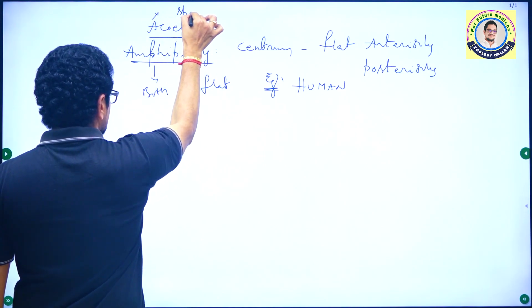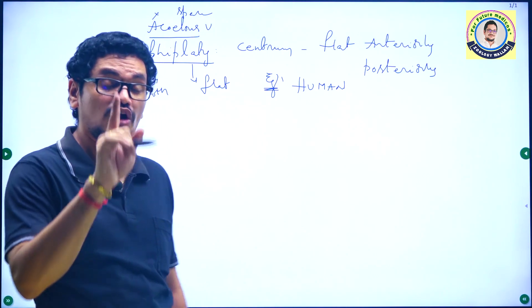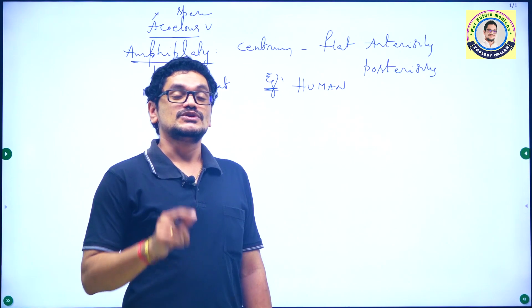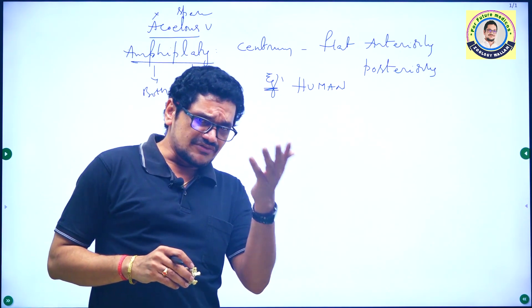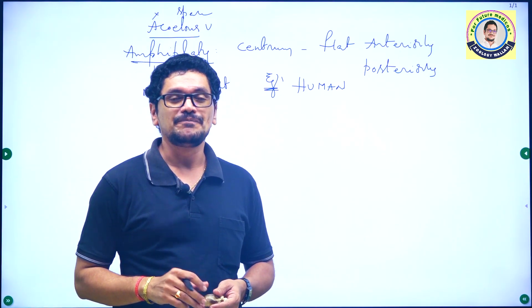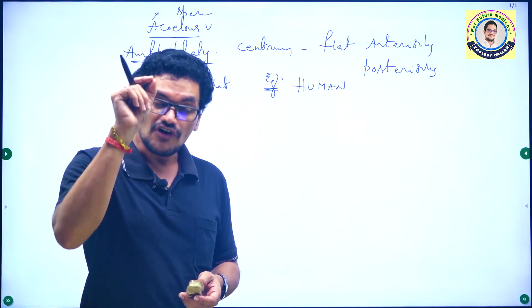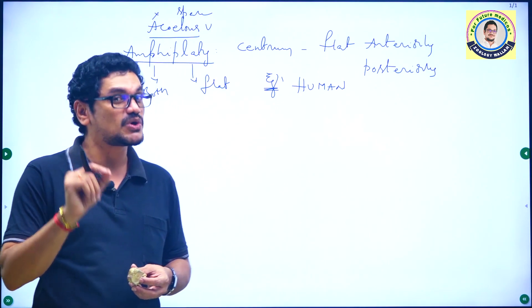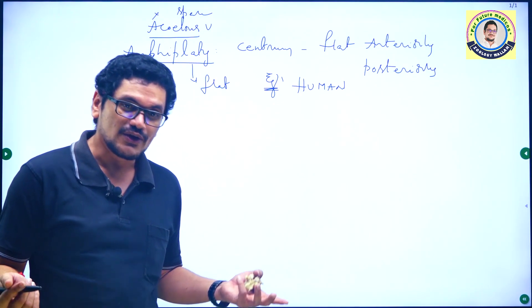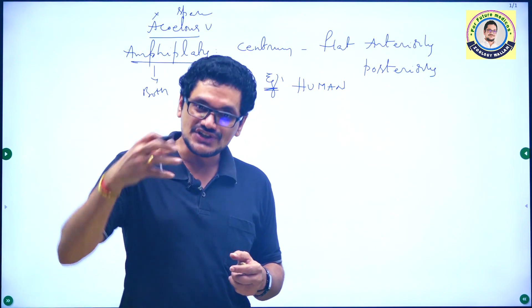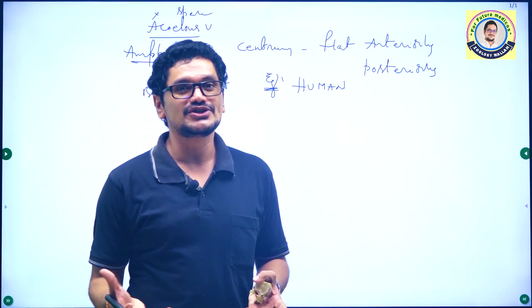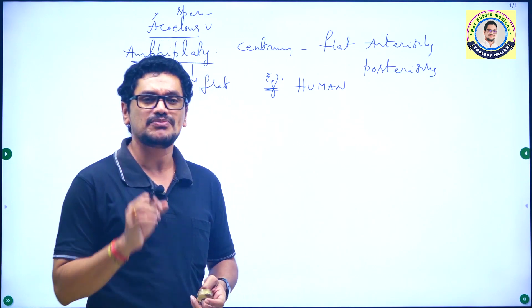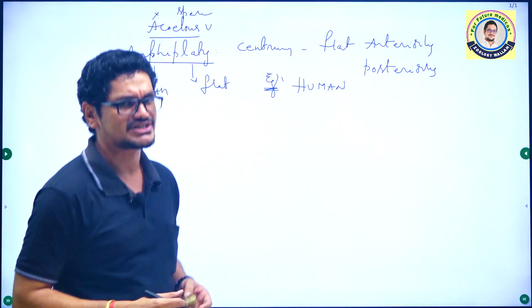A means absent — coelom is absent. Coelom is a very important element in the body, which helps in evolution. There are different factors for the evolution of an animal. Formation of tissues and formation of coelom are very important factors. The empty space in the body is very important. If there is no empty space, organs cannot move freely — there should be space inside and outside the organs.